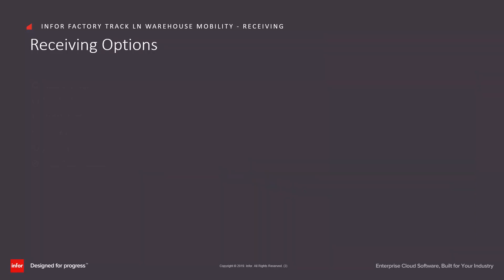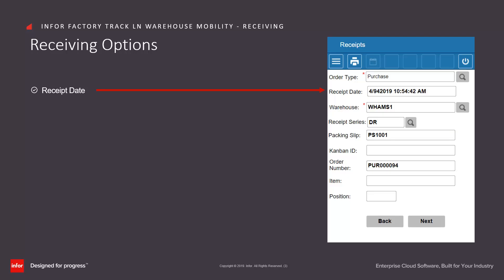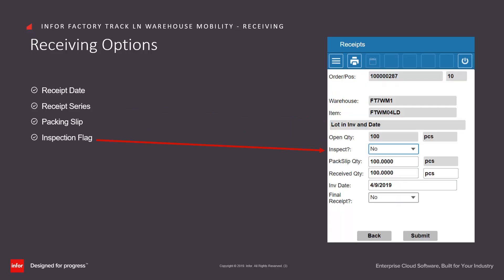There are certain options that are available while receiving, depending on how the parameters have been set. The operator can change the receipt date, can enter a receipt series, can enter a packing slip reference, can choose that this receipt needs to be inspected, can enter the inventory date, or can select whether it is a final receipt or not.